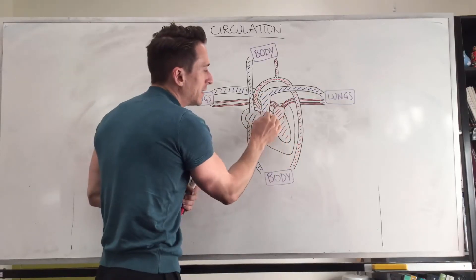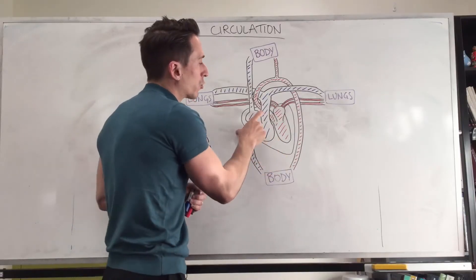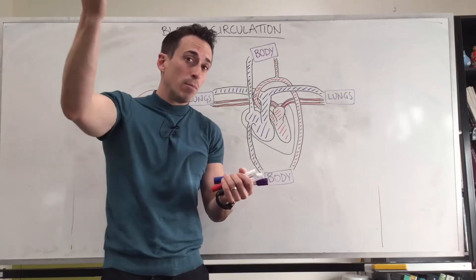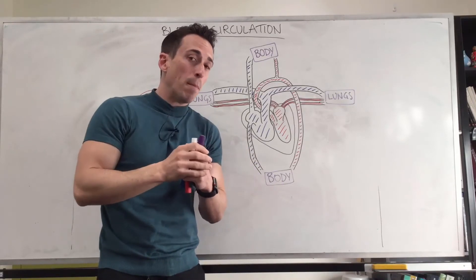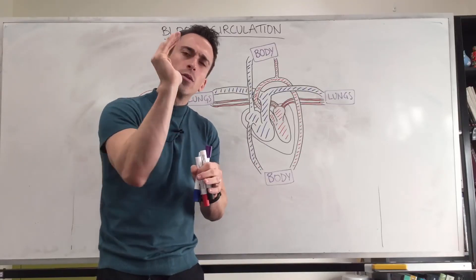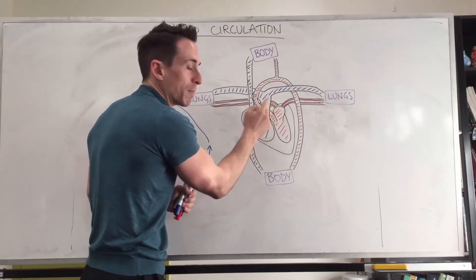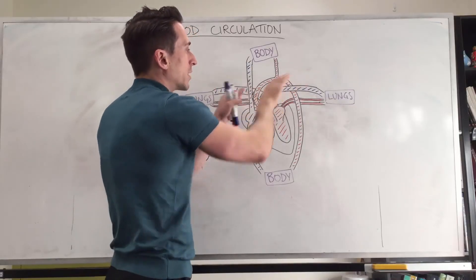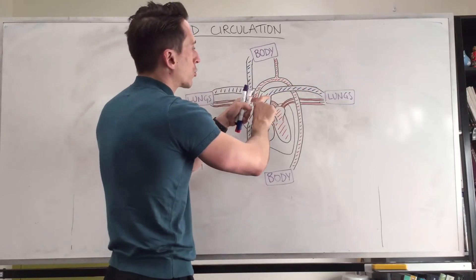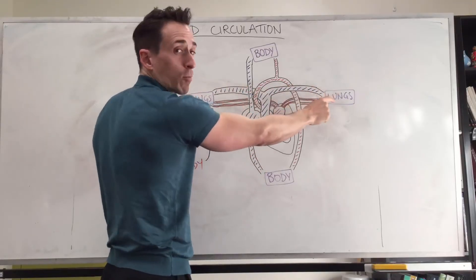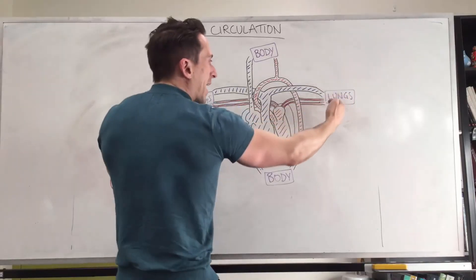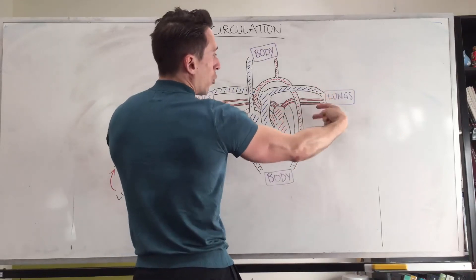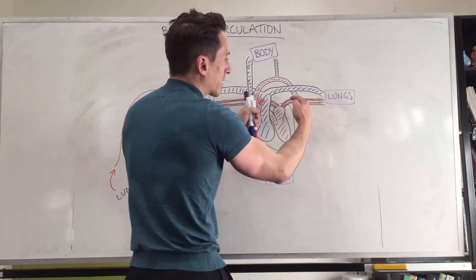There is another valve here called a semilunar valve — specifically the pulmonary semilunar valve. Semilunar refers to the crescent moon shape; lunar means moon, and a crescent moon is a semilunar shape, so these valves have a crescent shape. The right ventricle contracts, pushes blood up the pulmonary artery, which bifurcates — splits — and goes through the pulmonary arteries to the left and right lungs, gives the blood oxygen, and it comes back to the heart via the pulmonary veins — four of them, two on either side — going back to the left atrium.